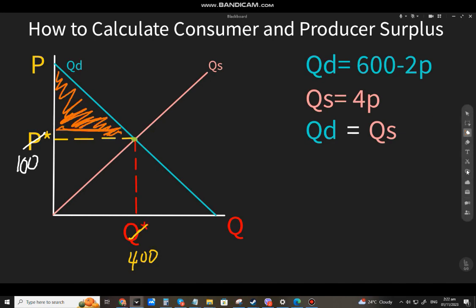Ang producer surplus naman, yung area below the price. Ah, sorry. Yung producer surplus, ito yun yung area dito. Below siya ng market price at above siya ng supply curve. So, ito yun. Uli, color blue.